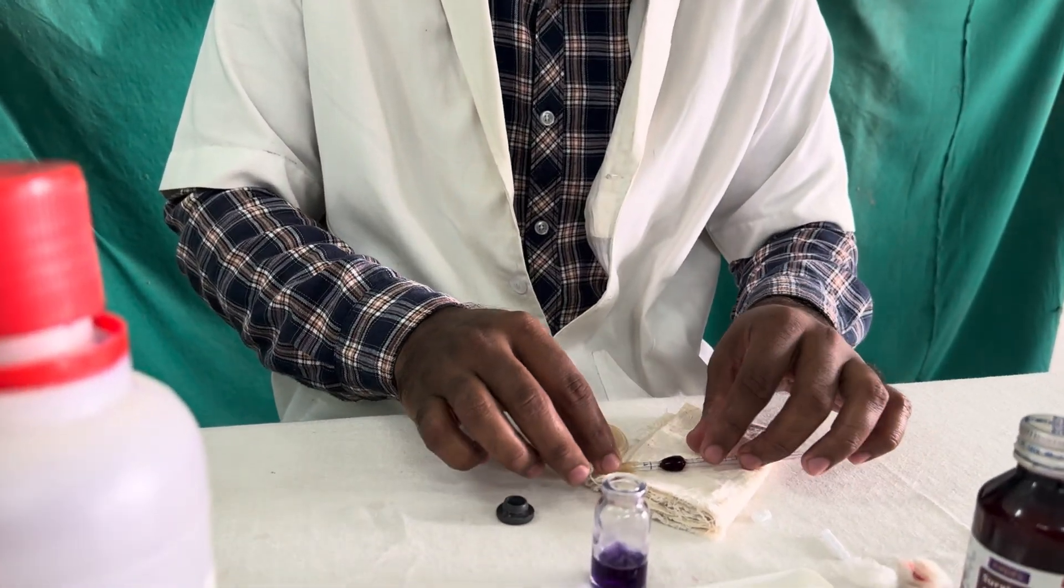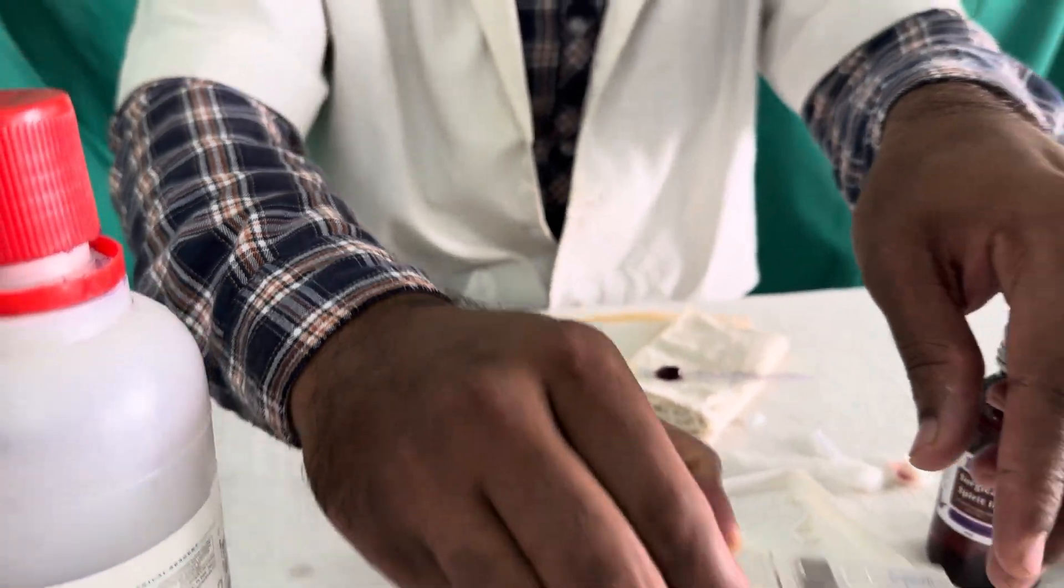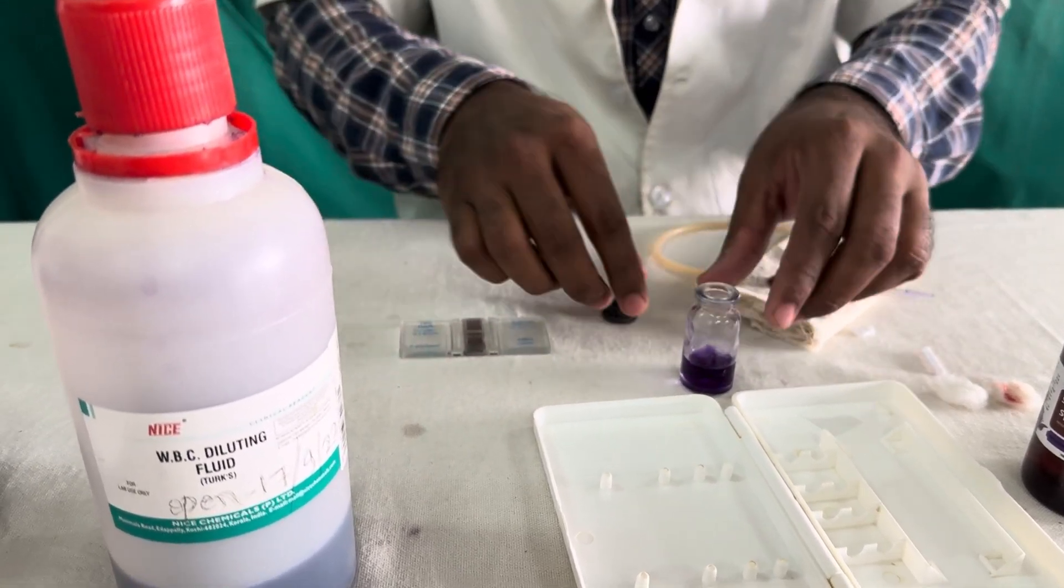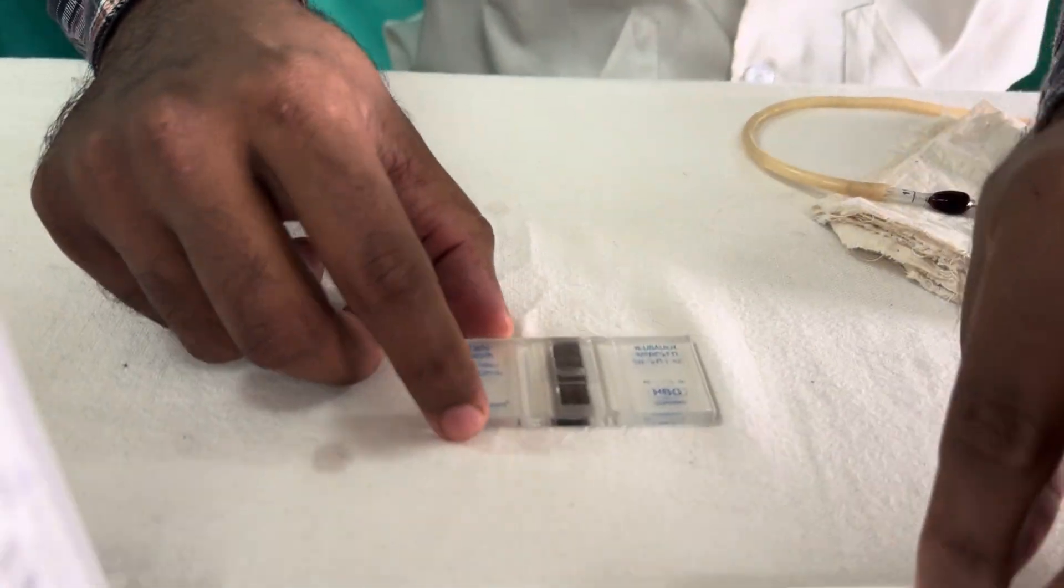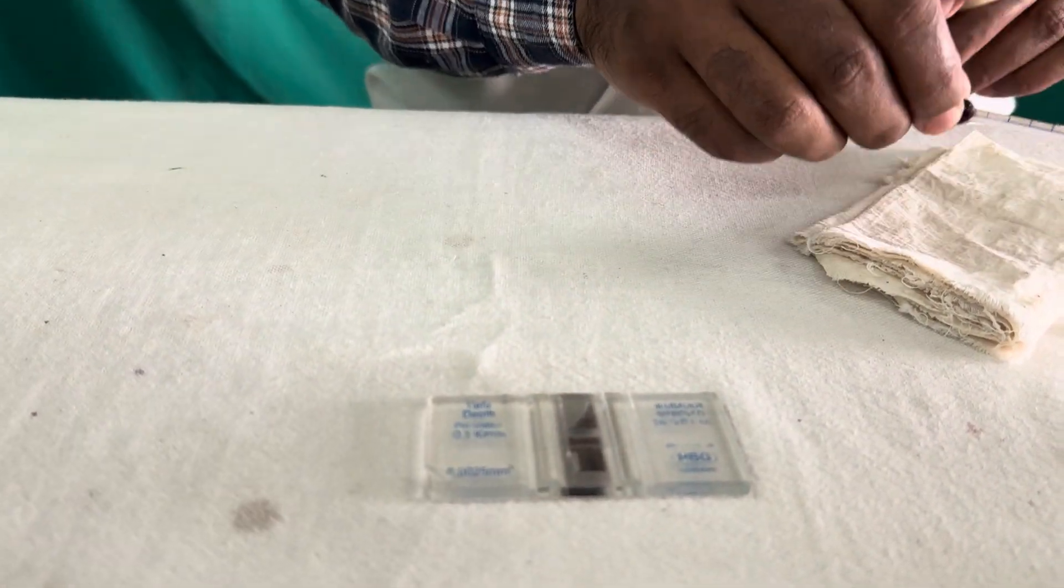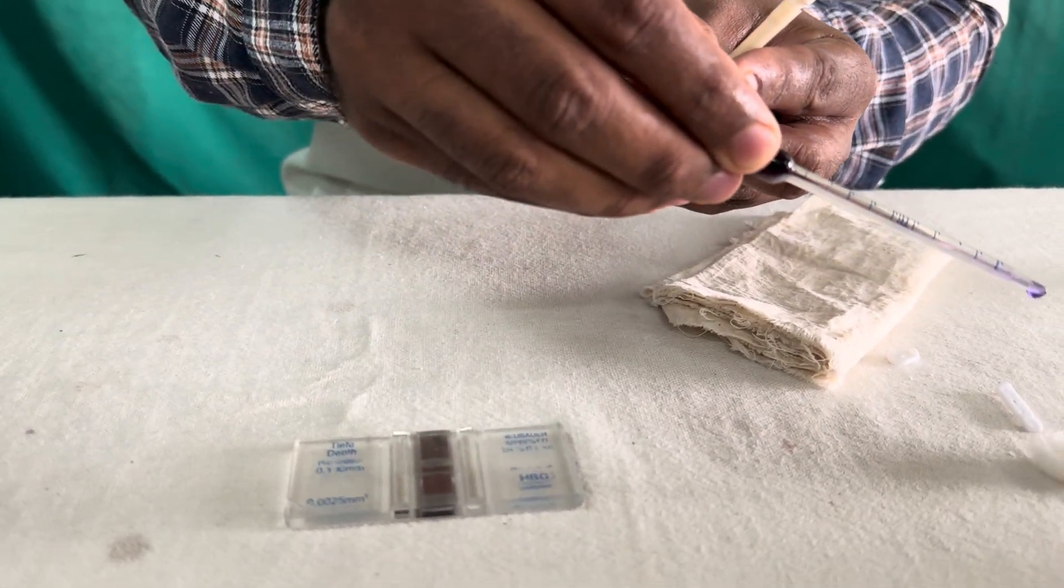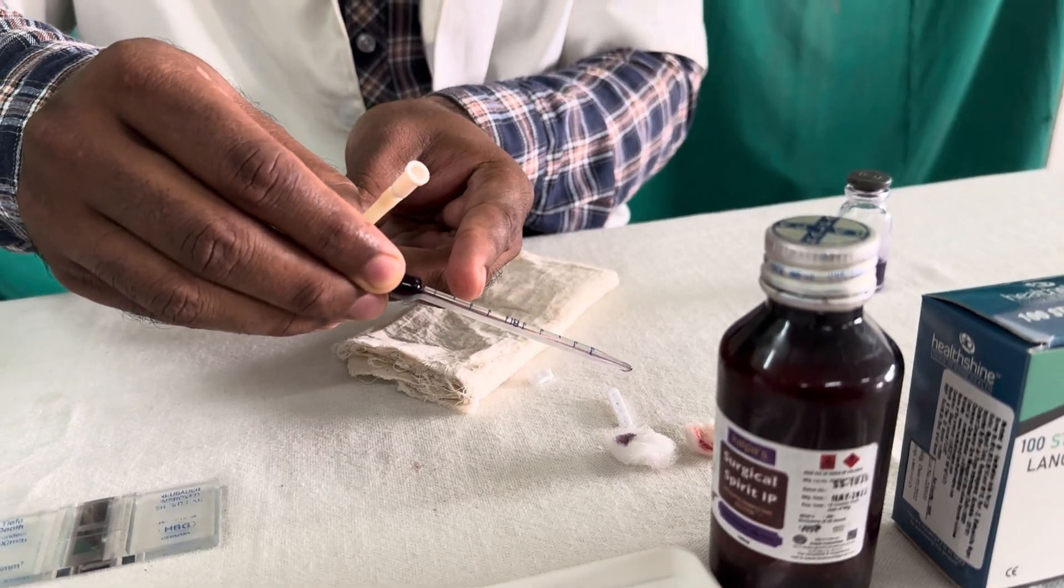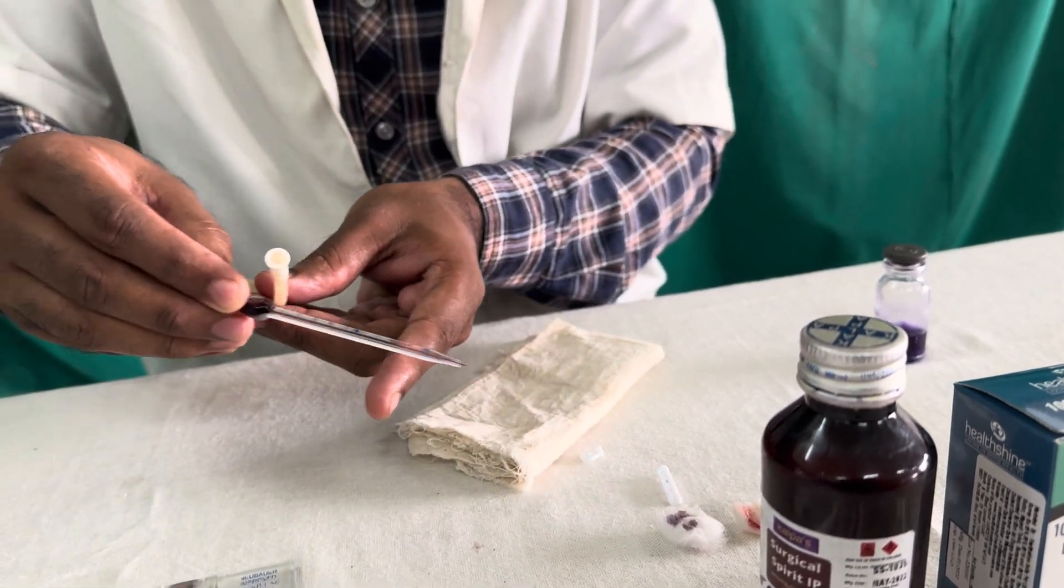Then you need to charge it. The charging is same like charging which we saw in the total RBC count. Again similarly you have to keep a cover slip on the improved Neubauer chamber. Then just bring the WBC pipette first you have to discard the two drops because in the stem there is only the diluting fluid not the mixture with blood.